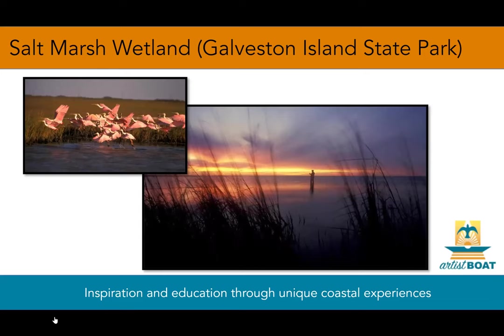While living, cordgrass is seldom eaten — only by a few herbivores. Once dead, however, it provides nourishment to the large bay food web as detritus. Edges of the salt marsh serve as refuge and nursery habitat for juveniles of many species, especially brown and white shrimp. These habitats are also important feeding grounds for wading birds such as herons and egrets. At higher elevations, marsh hay and gulf cordgrass occur, although they are more common in brackish marshes.